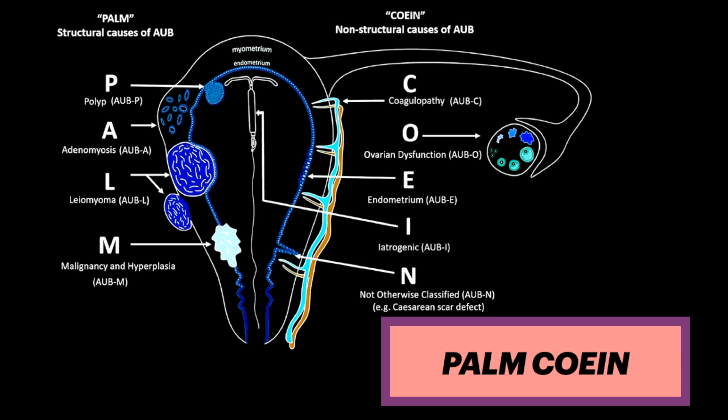If there is vaginal bleeding, one should keep in mind the mnemonic PALM-COEIN, which many of us learned during OB-GYN rotation — this is the differential for abnormal uterine bleeding. For structural causes, think of PALM: P for polyp, A for adenomyosis, L for leiomyoma or fibroid, and M for malignancy and hyperplasia. For COEIN, think of non-structural causes: C for coagulopathy, O for ovarian dysfunction, E for endometrial issues, I for iatrogenic causes, and N for not otherwise specified — for example, C-section scar defect.